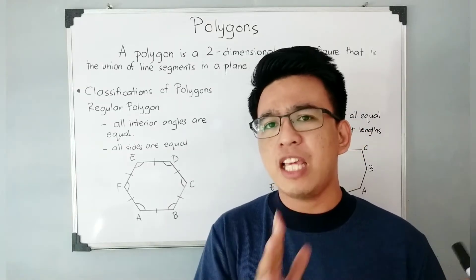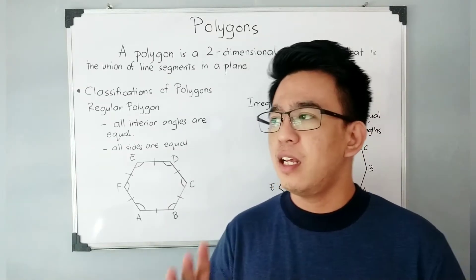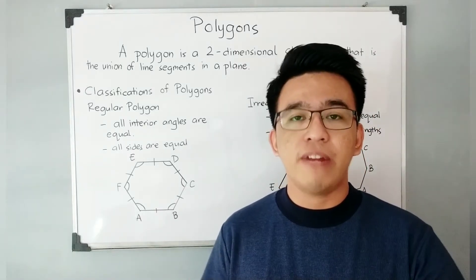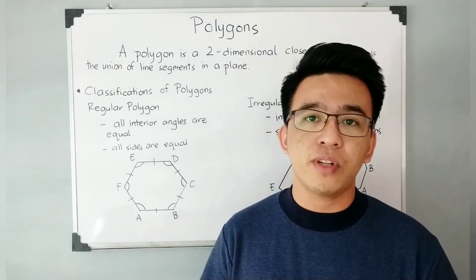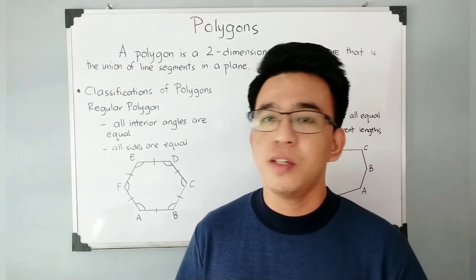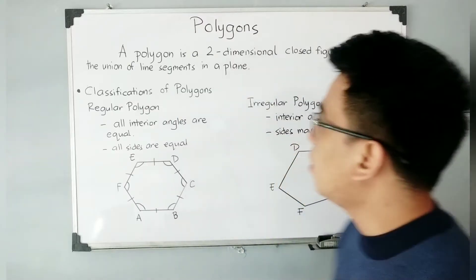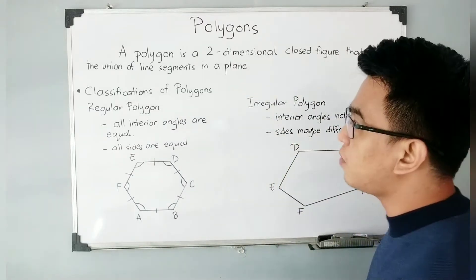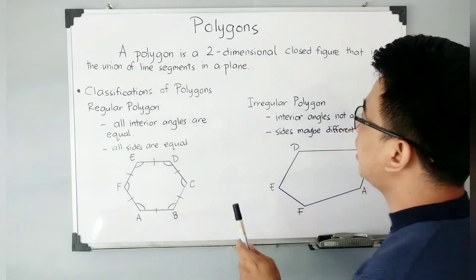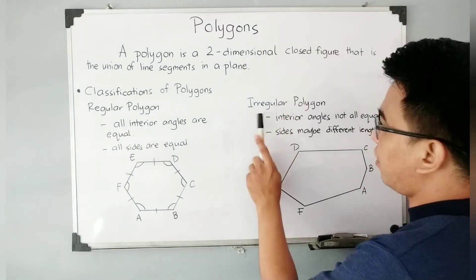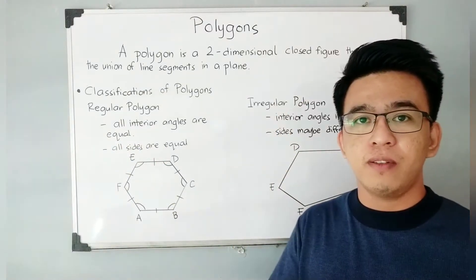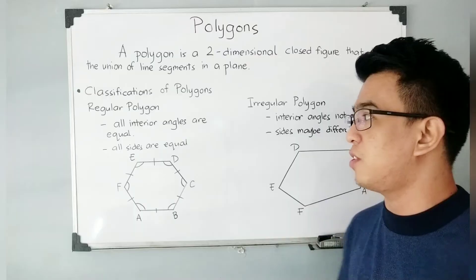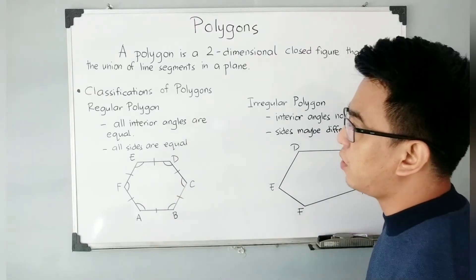To make it easier for you to understand, some examples are triangles and rectangles — those are examples of polygons. We have here two classifications of polygons. The first one is the regular polygon and the irregular polygon. And later on, we have different classifications. So let's start with the regular polygon.